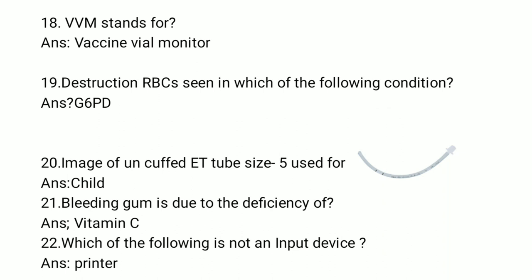Next question: Destruction of RBC is seen in which of the following conditions? The answer is G6PD — Glucose-6-Phosphate Dehydrogenase deficiency. In this condition, rupture and destruction of RBCs occurs, leading to anemia.